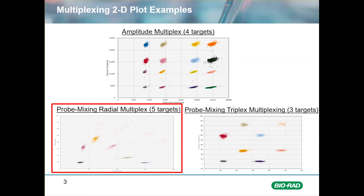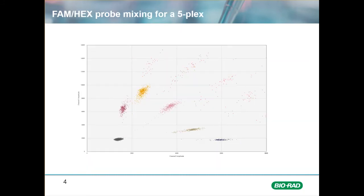For the other two methods, see the additional videos. Probe mixing radial multiplexing allows for five targets to be multiplexed and quantified. Here is an example of five single nucleotide polymorphisms being detected in a single well by creating mixtures of FAM and HEX probes for each target.